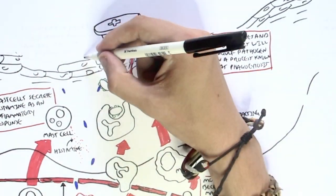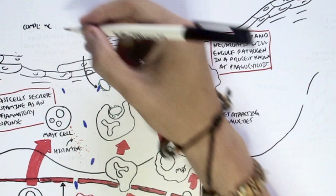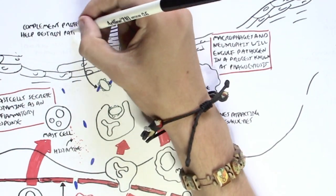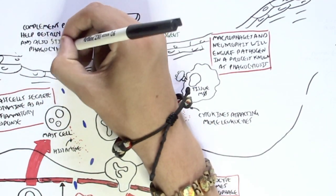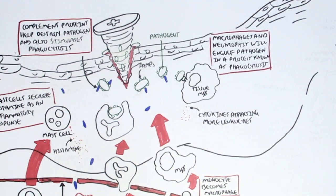Now, the complement proteins here will also enter this tissue. And the complement proteins help destroy the pathogen and also stimulate phagocytosis. So it stimulates destruction and phagocytosis of the pathogen.